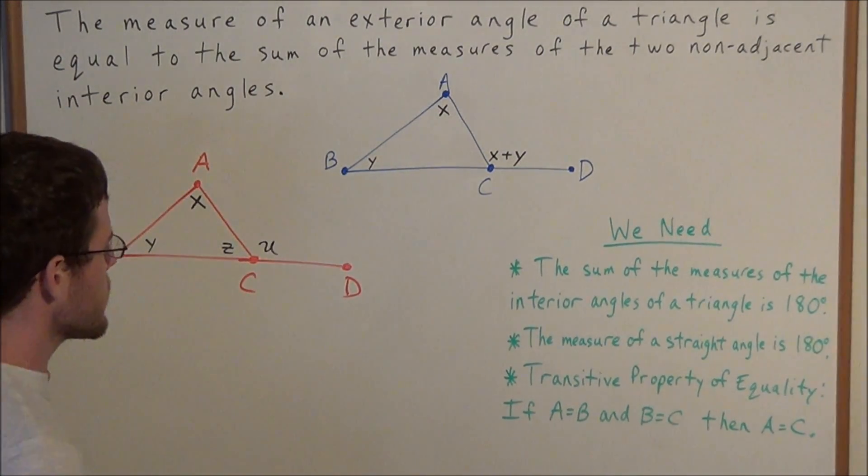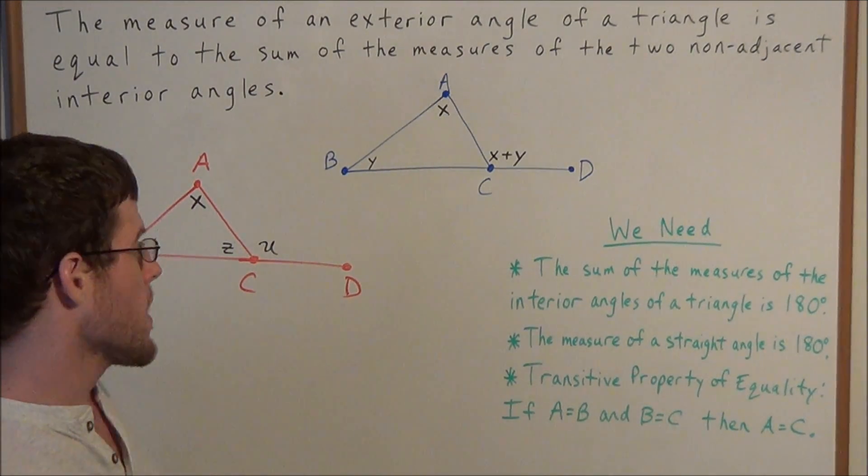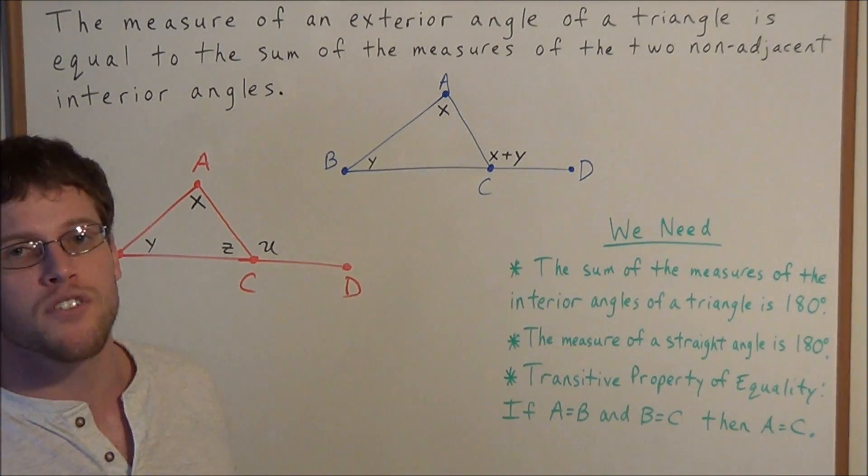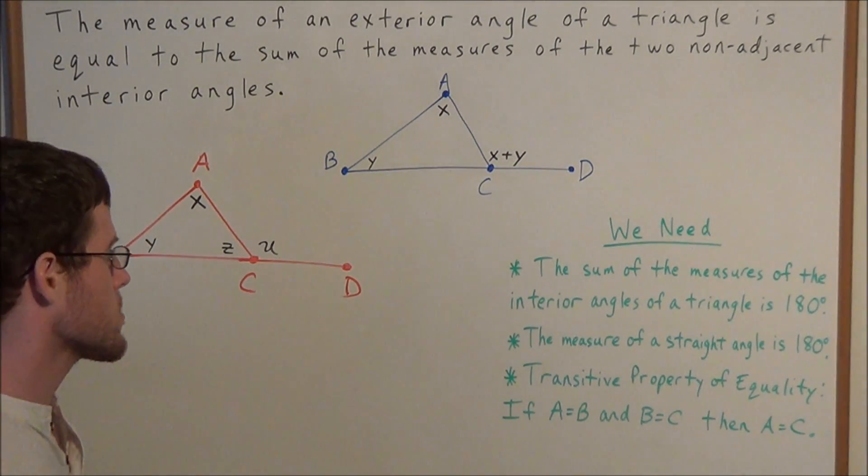We can set the measure of angle ACD equal to U. Because we're using four different variables, it doesn't matter what we call them. Now let's try to see why this exterior angle is equal to the sum of the two non-adjacent interior angles.